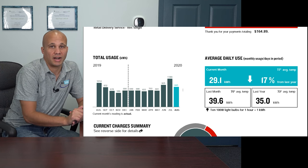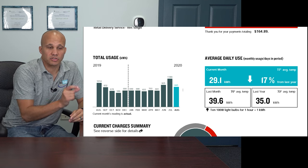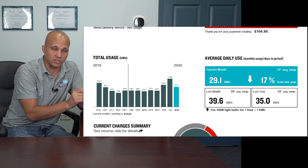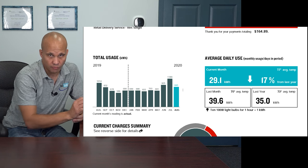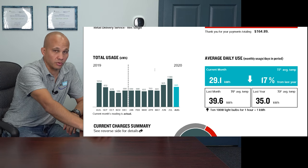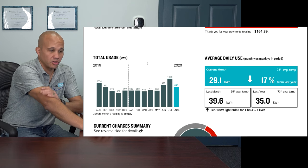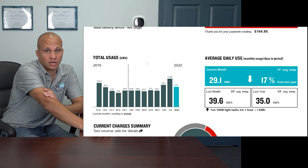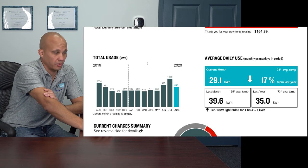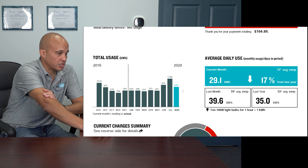KWH is kilowatt hours — how many kilowatts you use multiplied by how many hours you've used them for. It's a unit of energy, whereas kilowatts is a unit of power. Your bill will show you both, and especially when we get to commercial bills, KW and KWH both become very important in how much you're going to spend.